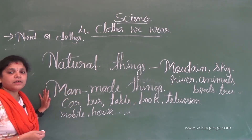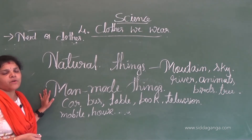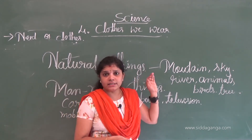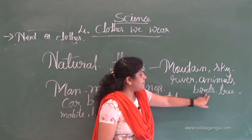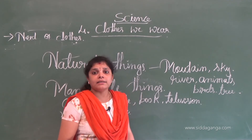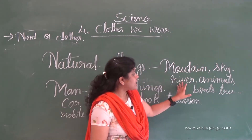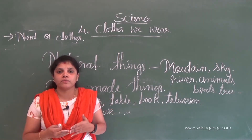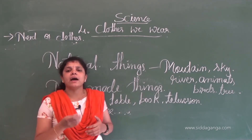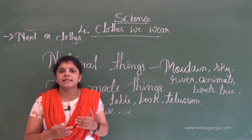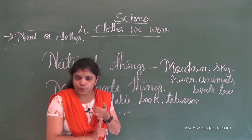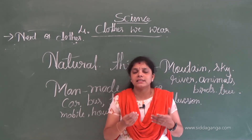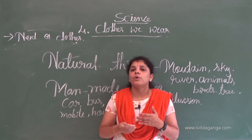Living things have life-processing activities. For example, living things can move, breathe, reproduce, and feel and react. These life-processing activities happen in living things only. Non-living things cannot move, do not need food, and cannot reproduce — that is why they have no life.